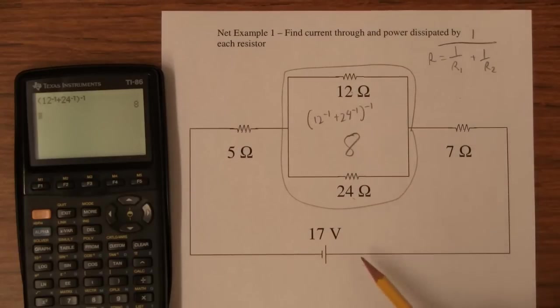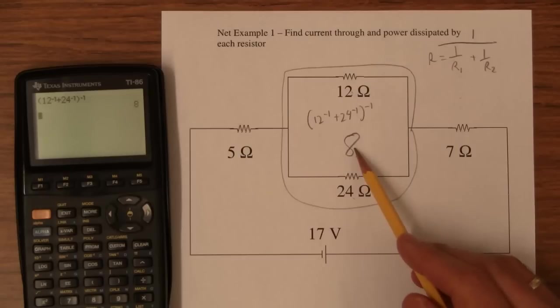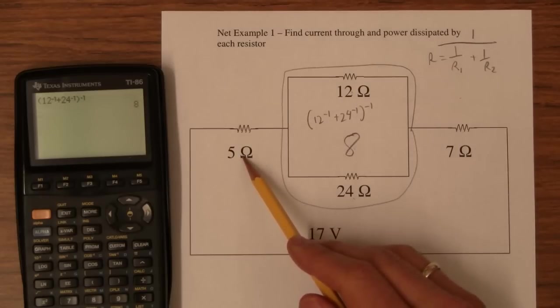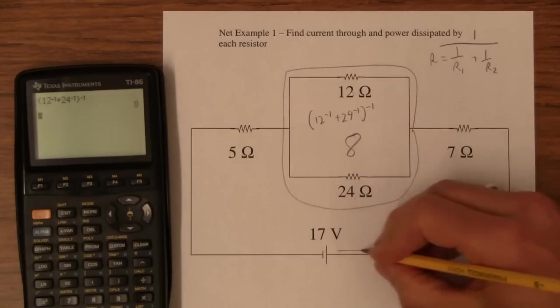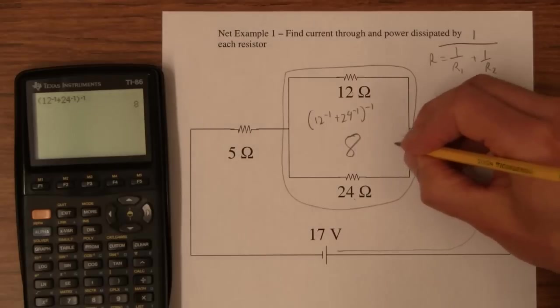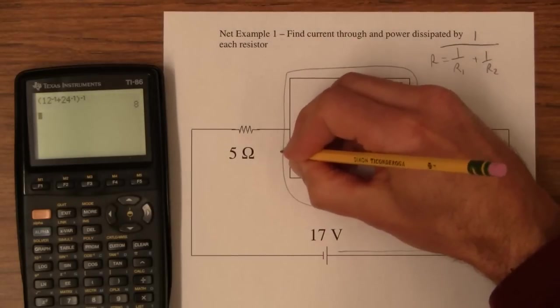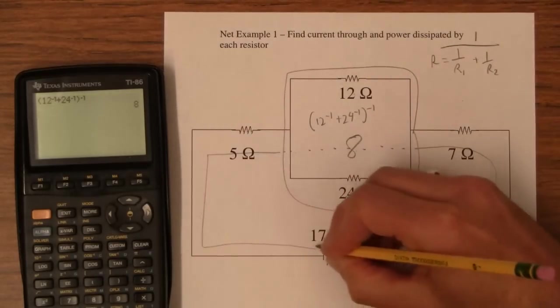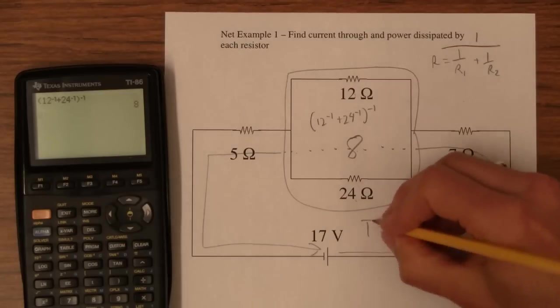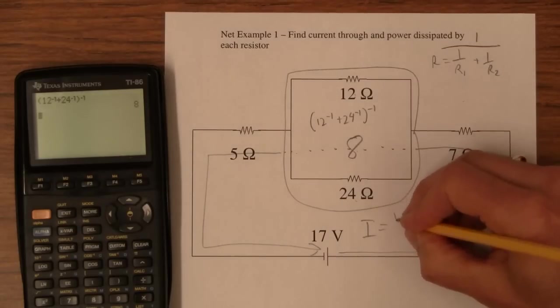Now, this is a series circuit. I've got a 17, a 7. I'm going to pretend this is just an 8-ohm resistor and that that's a 5. So my current that goes here, we'll worry about what it does inside there later. But that current, I, is just going to be V over R. I'm using Ohm's law here.